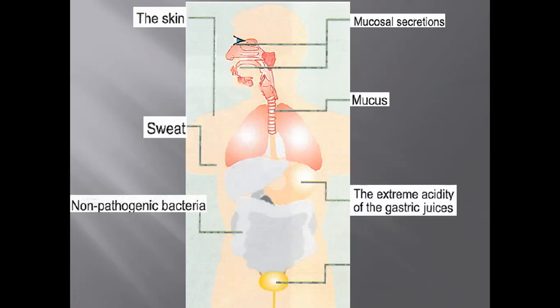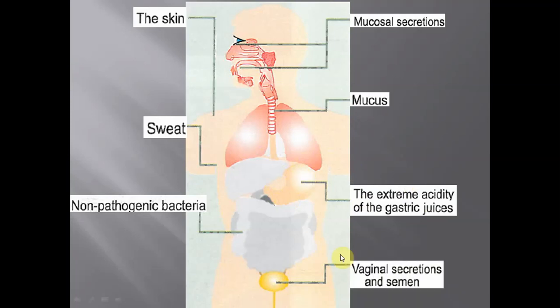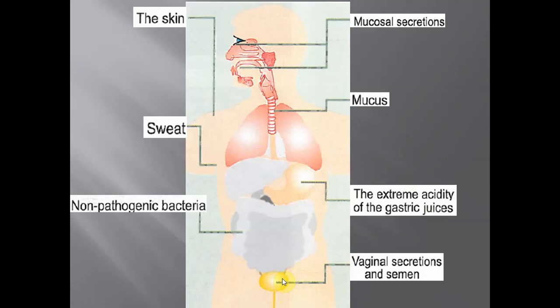The extreme acidity of the gastric juices in the stomach — with a pH between 1 and 2 — is also not suitable for the survival of microorganisms. Finally, vaginal secretions and semen protect our sexual organs and urinary tract, and urine also makes this area not suitable for the survival of microorganisms.